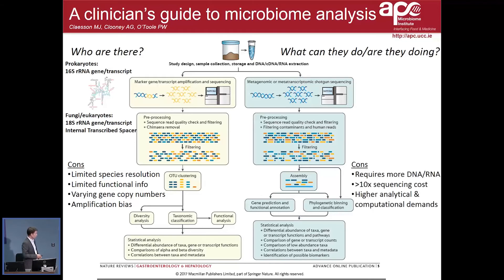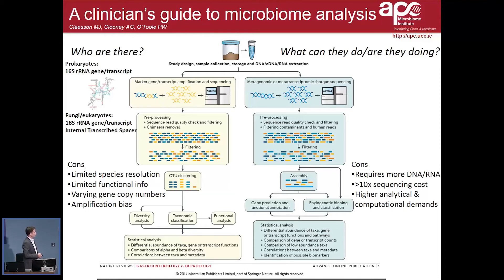In terms of the shotgun approach, it requires more DNA or RNA, which is usually not a problem for stool samples. But for mucosal biopsies, you have quite limited microbial DNA — most of the DNA you get is actually from the host — so it may not be possible to do metagenomics or metatranscriptomics very well. And obviously there are costs: it could be over an order of magnitude more expensive per sample. The analytical and computational demands are also much greater, requiring more expertise to process and store the data.